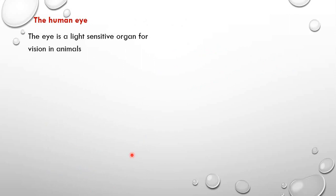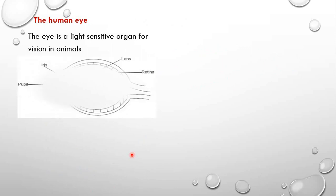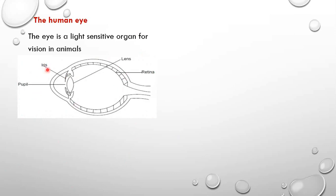The eye is a light sensitive organ for vision in animals. Let's look at how it looks like — the cross-section through it. We have mainly four parts. There are of course a number of parts in the eye, but these are the major parts required for vision. We have the pupil, the iris, the lens, and then the retina. We are going to look at the function of each of those parts.